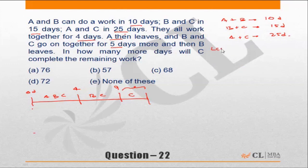So in this question, let me assume the amount of work to be LCM of 10, 15, and 25. These are the days which are mentioned here, so LCM would be 150. So let me assume the amount of work to be 150 units. That means A plus B together will be 15 units per day.